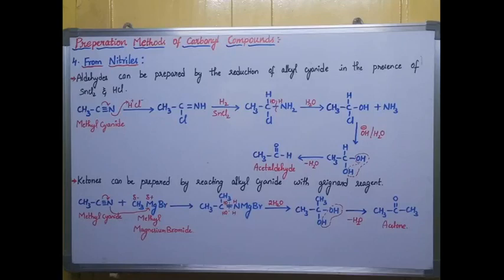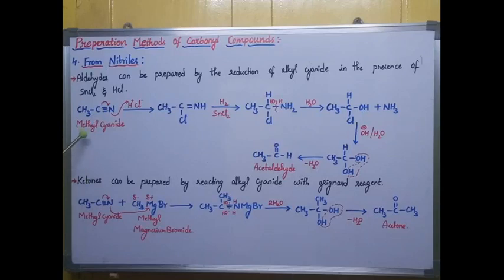The next method of preparation is from nitriles. Nitriles are compounds that consist of a carbon-nitrogen triple bond. Here we are taking alkyl cyanide and reacting it with a particular reagent to get carbonyl compounds. First, I am preparing aldehydes.